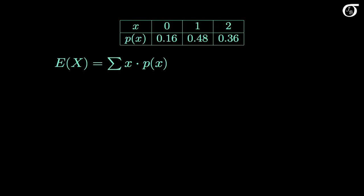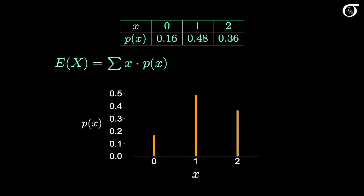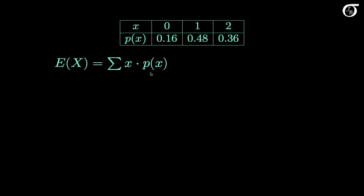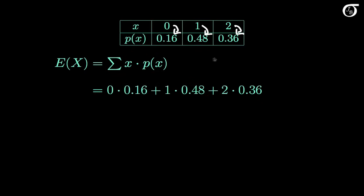Here's the formula for the expectation of X. I'm also going to plot the probability distribution with the three values of x on the x-axis and their probabilities of occurring on the y-axis. To calculate the expectation, we multiply each value by its probability of occurring and add up all those terms. That's 0 times 0.16, plus 1 times 0.48, plus 2 times 0.36. That works out to 1.2, so the expected value of the random variable X is 1.2.